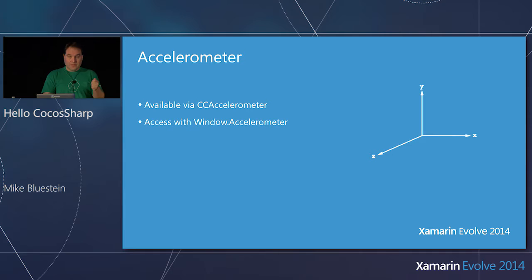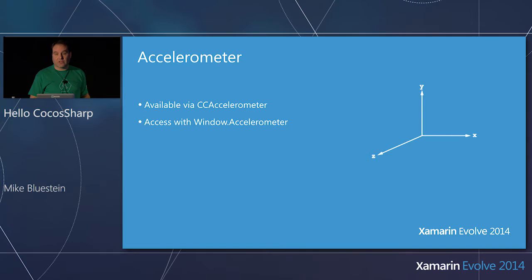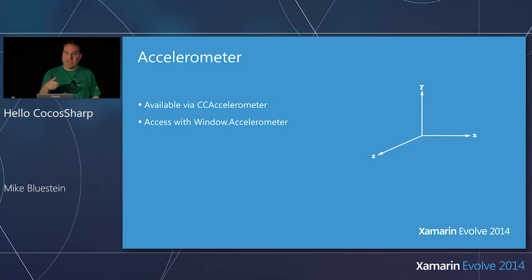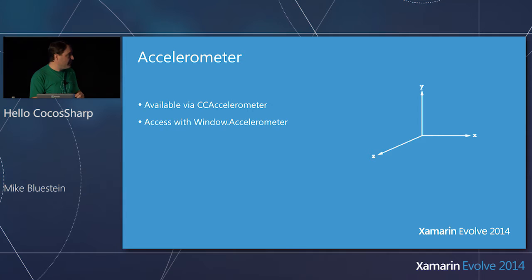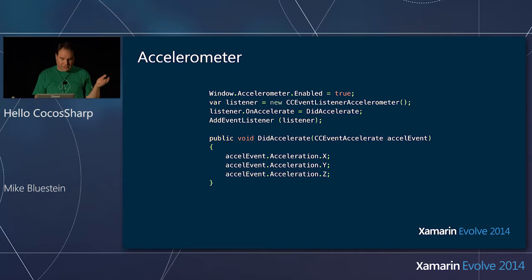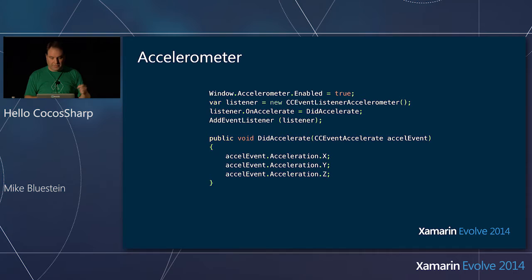Likewise, there's motion support on these devices — things like games like Doodle Jump where you want to use an accelerometer. We expose a class called CC Accelerometer for cross-platform motion support through the sensors, so you don't have to deal with the differences between platform implementations. You enable it, opt in just like the touch interface, and just handle a callback. You have X, Y, Z direction to handle the acceleration in whatever direction. Very simple to handle touch and motion to control your game.